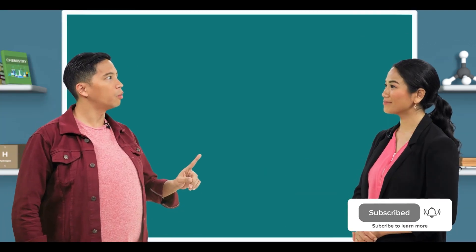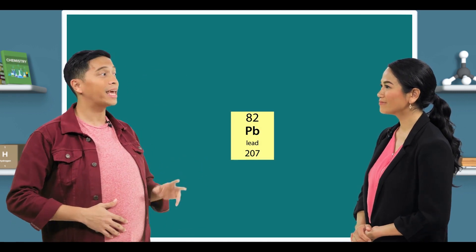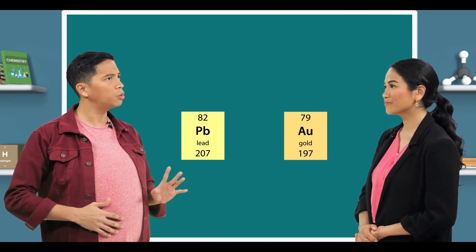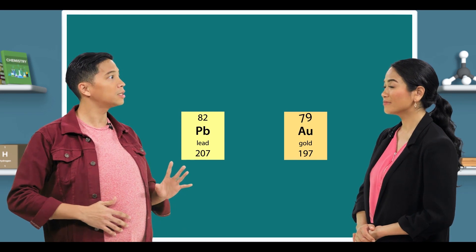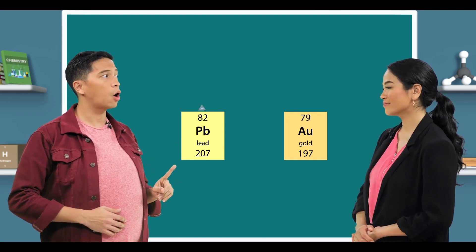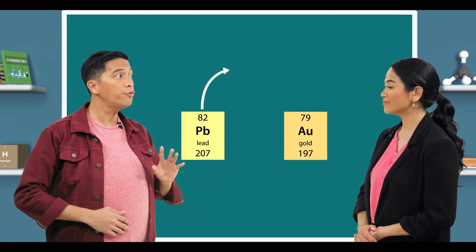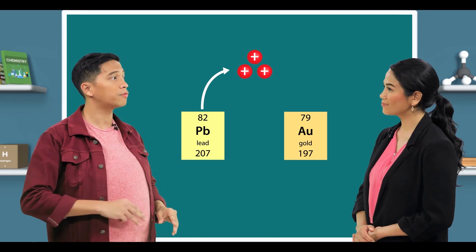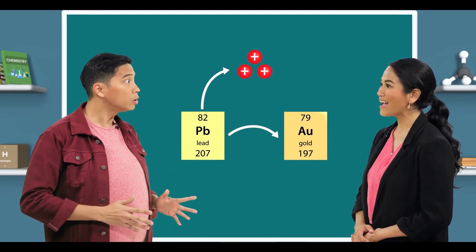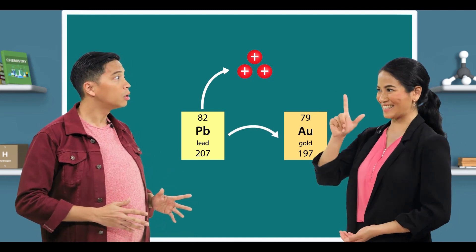Oh wait a minute! Since lead contains 82 protons while gold contains 79 protons, then if we can somehow remove three protons from lead, we will get gold! Yes!